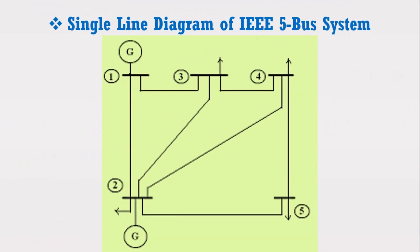Consider the figure which shows the single line diagram of IEEE 5 bus system. It can be observed that bus 1 is considered as the slack bus, and other generator as well as load is connected at bus 2, whereas all the remaining buses are load buses. We have to design the model of IEEE 5 bus system and determine the voltages at bus 2, 3, 4, and 5 using load flow analysis. Furthermore, we have to find the slack bus real and reactive power.